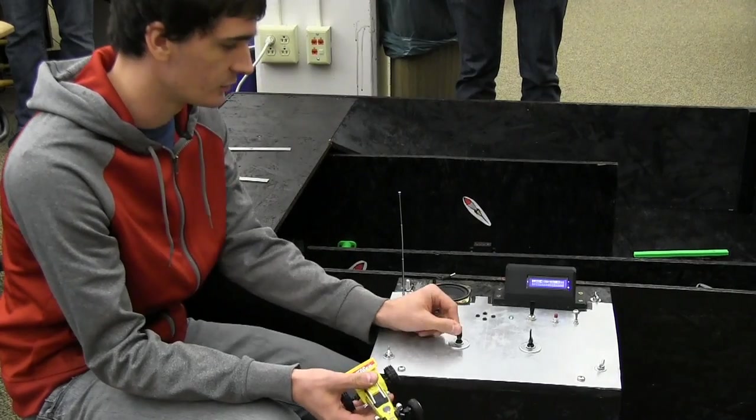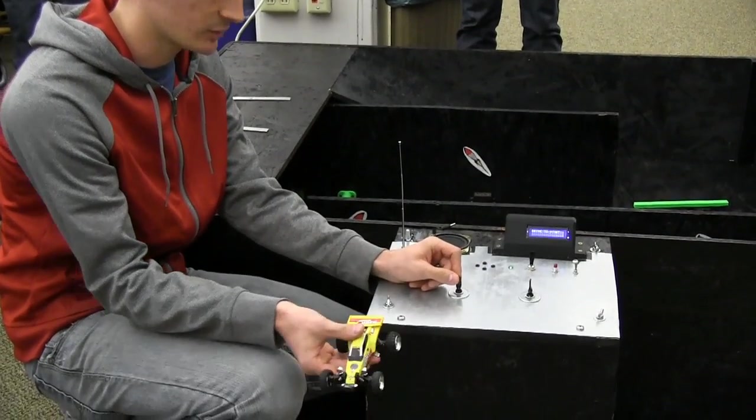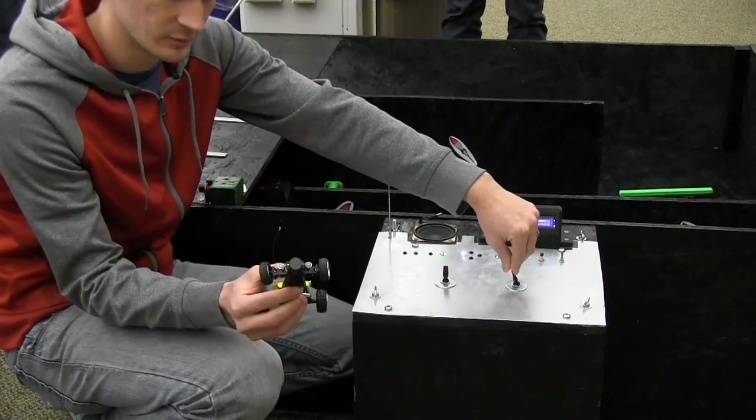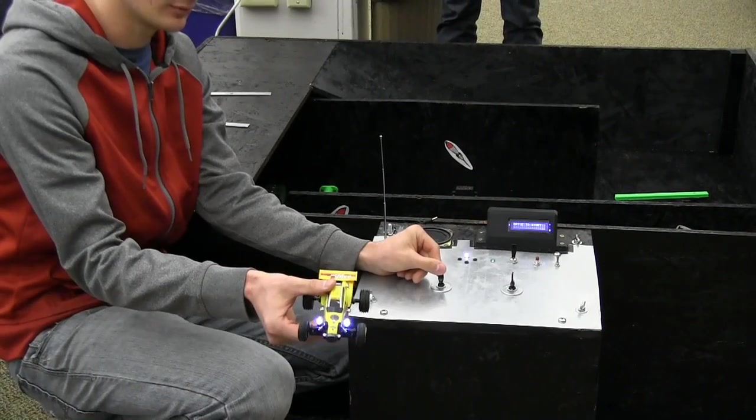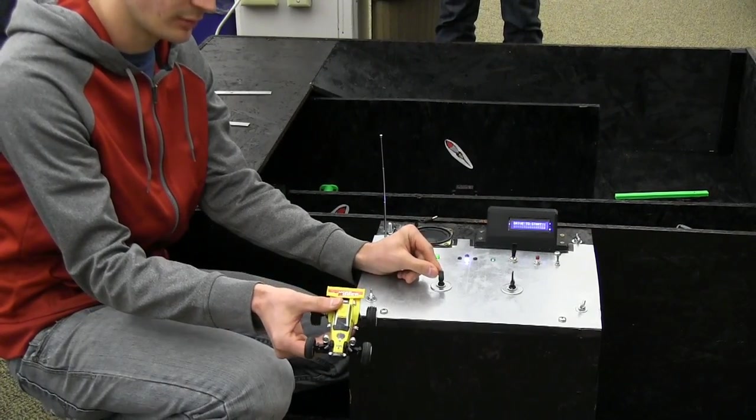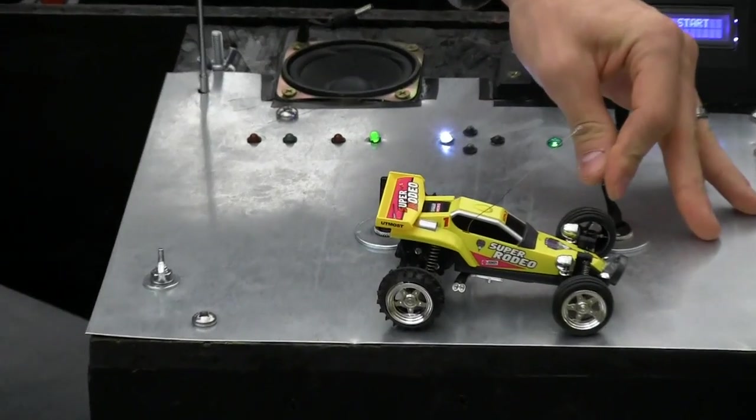We have an up and down for forwards and backwards, and then left and right which turns the wheels forward, backwards, right, left.